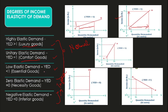The third case is low elasticity demand where, with the increase in income, the quantity demanded also increases but not as much as the proportionate change in income. Income has increased from Y to Y1 and quantity from Q to Q1, but the distance from Y to Y1 is much greater than the distance from Q to Q1. That is why income elasticity is less than 1. This happens in the case of essential goods — goods which are very important and indispensable, like basic household products, average-category mobile phones and laptops.